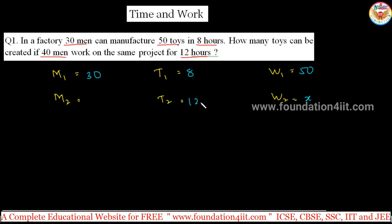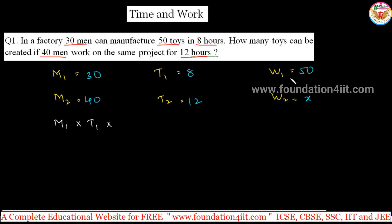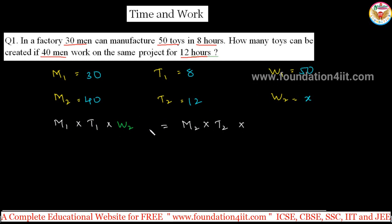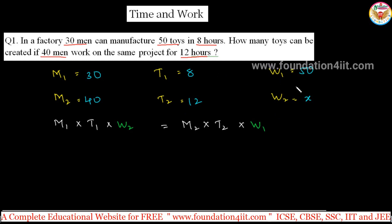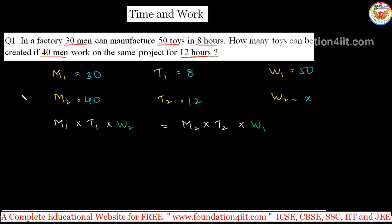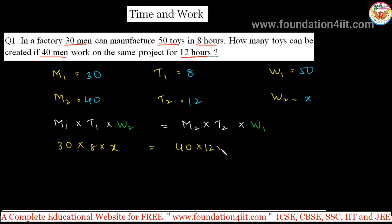Time 12 hours and 40 men if they work. The direct formula is M1 × T1 / W1 = M2 × T2 / W2 — but the work done should be reversed: W2 on the left side and W1 on the right. The number of men and time taken are inversely related, but the work is direct. That is why only the work done is taken as opposite. We substitute the values: 30 × 8 × x = 40 × 12 × 50.